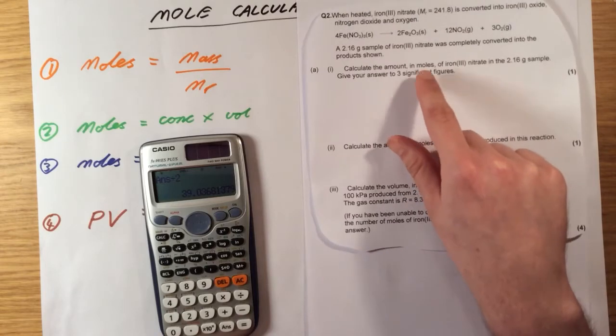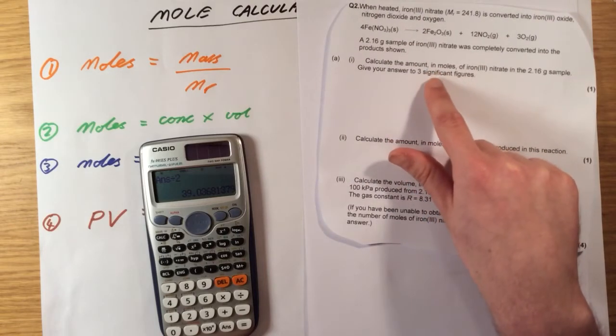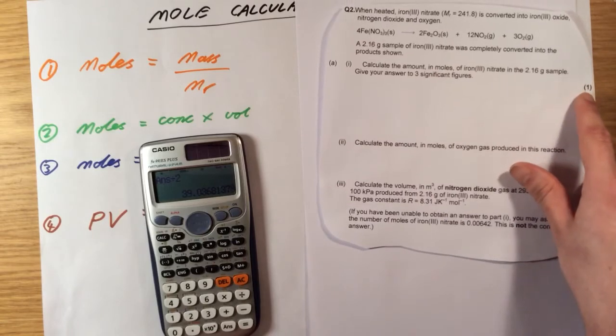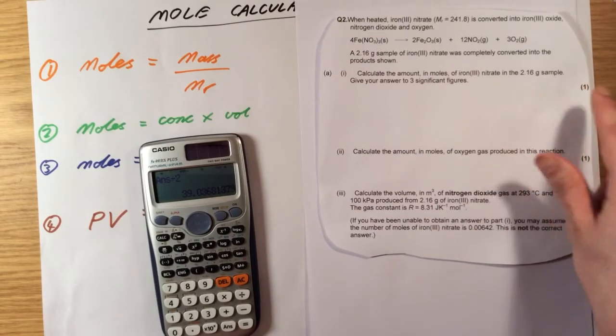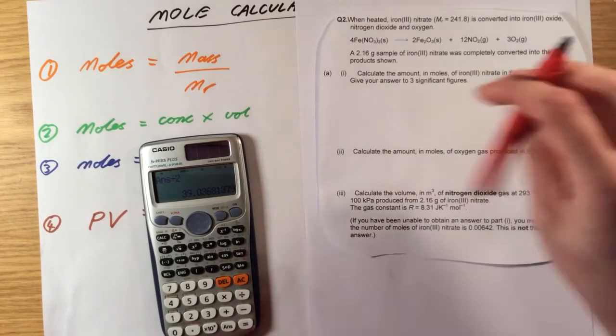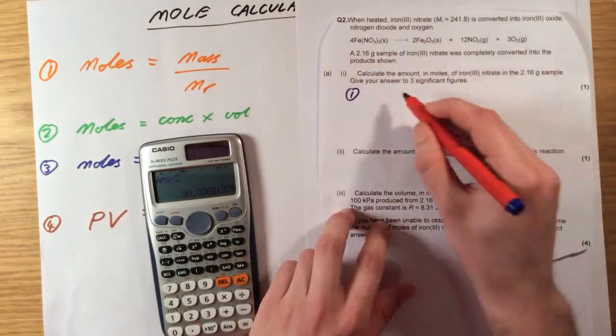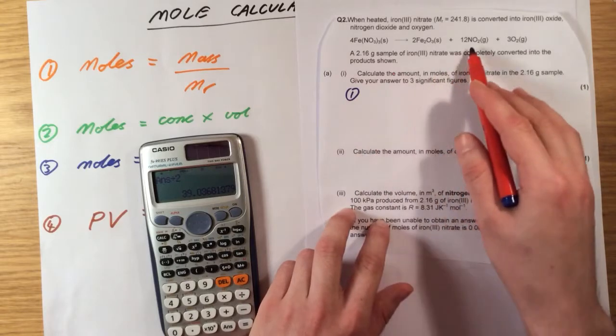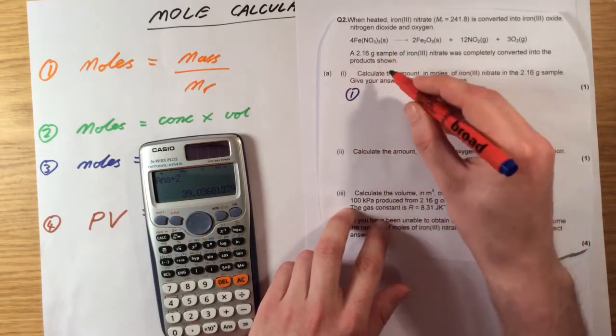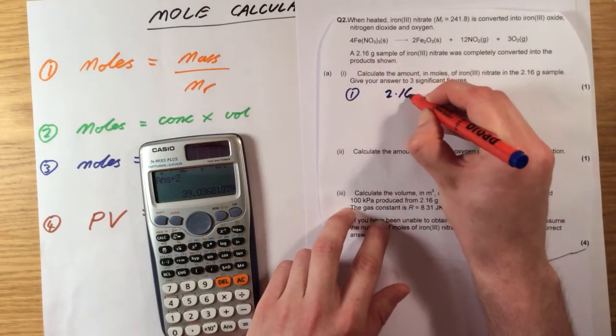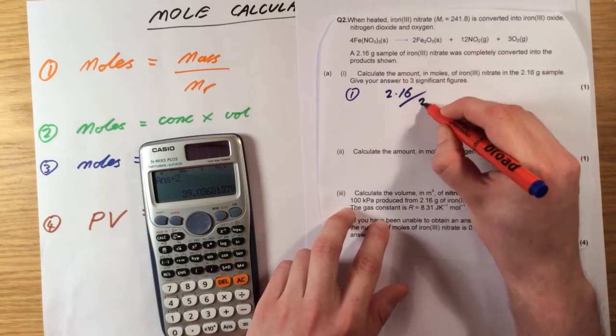Thankfully because we're doing that anyway, we don't need to worry about that. But make sure you do give it to three significant figures. This question is one mark. What that's telling me is I only need to use one equation. That equation is equation one. Moles is mass divided by MR. The mass of the sample is 2.16 grams. It even tells me MR in the question.